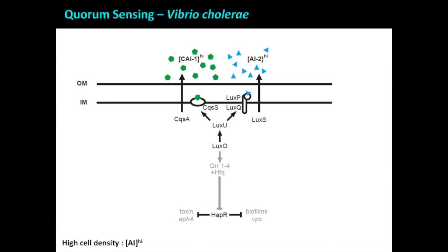At high cell density, everything's reversed. The ligands bind to their receptors and change their conformation from behaving like kinases to behaving like phosphatases, which means they suck phosphate out of the system. The end result is that LUXO is no longer active and can't turn on the small RNAs. The end result is that HapR is produced, and the virulence genes are turned off. In the Bassler lab we proposed a model that perhaps Vibrio cholerae, when residing in the small intestine, uses quorum sensing to trigger and facilitate release — when it reaches high cell density, it shuts off biofilm attachment factors and the toxin, allowing the body to clear it more readily so that the bacterium can be released into the environment to find a new host.